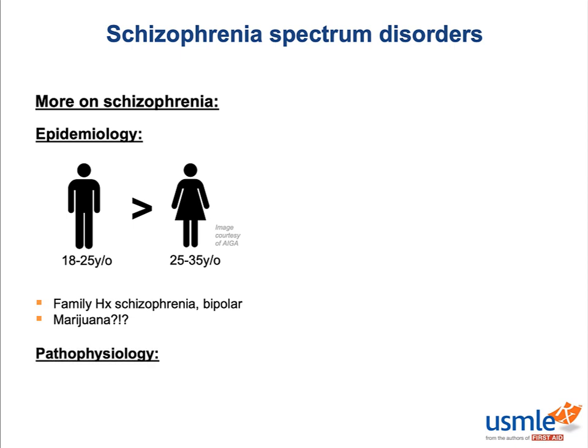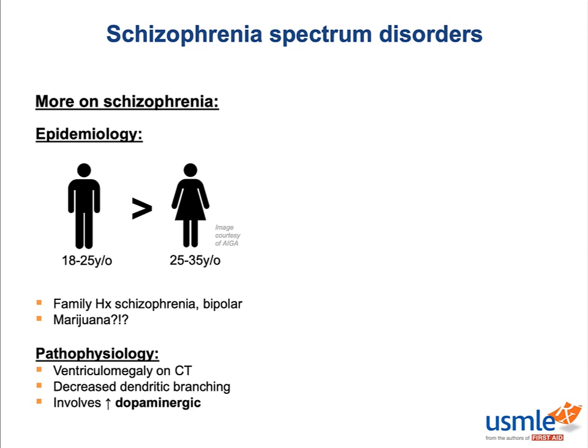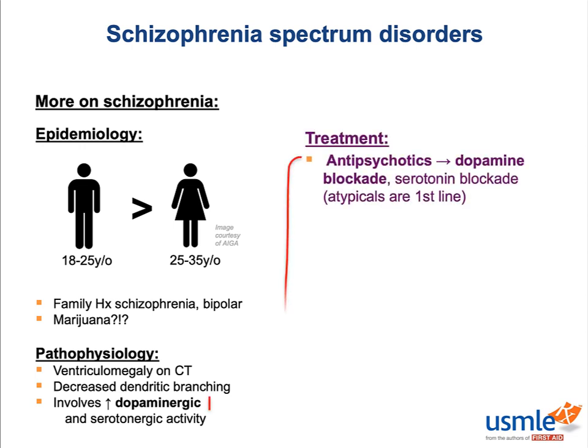Nobody really knows what exactly causes schizophrenia or the rest of the psychotic disorders, but there are a couple of pathophysiologic correlations that help guide treatment. You often see enlarged ventricles on CT and increased dendritic branching on histologic evaluation. Increased dopamine activity in the cerebral cortex has historically been the focus of schizophrenia research, and increased serotonergic activity has an increasingly recognized role in its pathogenesis. The treatment involves dopamine blockade with antipsychotics and, to a lesser extent, serotonin blockade.